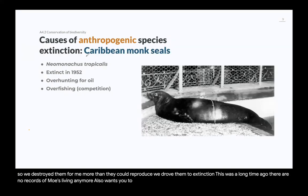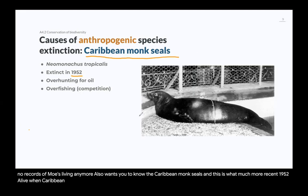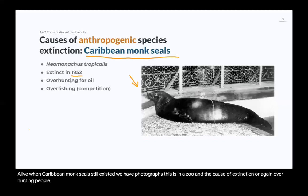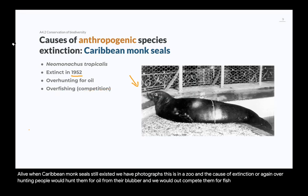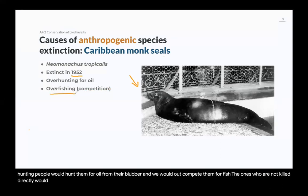IB also wants you to know the Caribbean monk seals. This was much more recent — in 1952, when my grandparents were alive, Caribbean monk seals still existed. We have photographs; this one is in a zoo. The cause of extinction was, again, overhunting — people would hunt them for oil from their blubber — and we outcompeted them for fish. The ones not killed directly would die from hunger. They went extinct in 1952, never to be seen again.